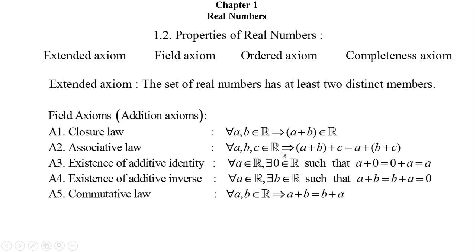For the existence of additive identity: there exists a real number zero such that when we add zero to any real number a, the result is a. That is, 0 + a = a and a + 0 = a. Here zero is called the additive identity because zero vanishes in the operation.